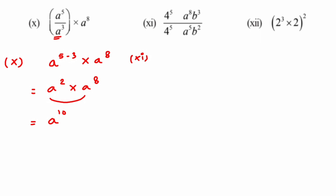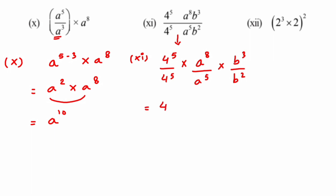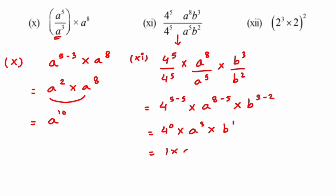Eleventh question: I separate it as 4 to the power 5 upon 4 to the power 5, multiplied by a to the power 8 upon a to the power 5, multiplied by b to the power 3 upon b to the power 2. Same base, dividing — subtract the powers: 4 to the power 5 minus 5, times a to the power 8 minus 5, times b to the power 3 minus 2. This gives 4 to the power 0 multiplied by a to the power 3 multiplied by b to the power 1. Since 4 to the power 0 equals 1, the answer is a cubed times b.